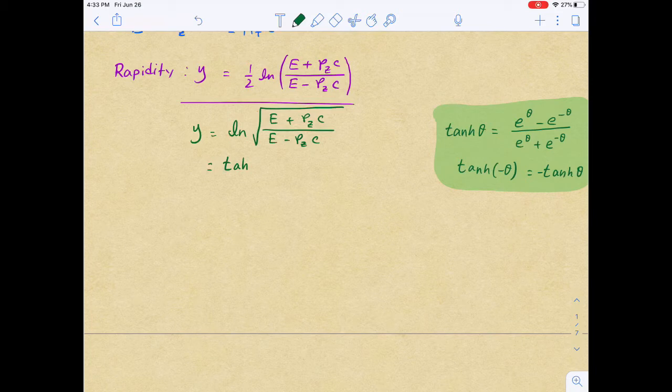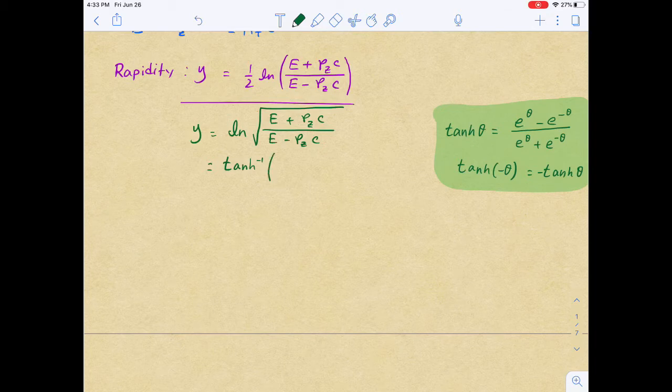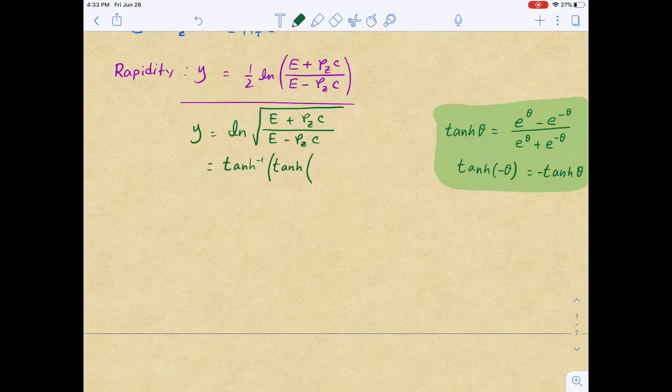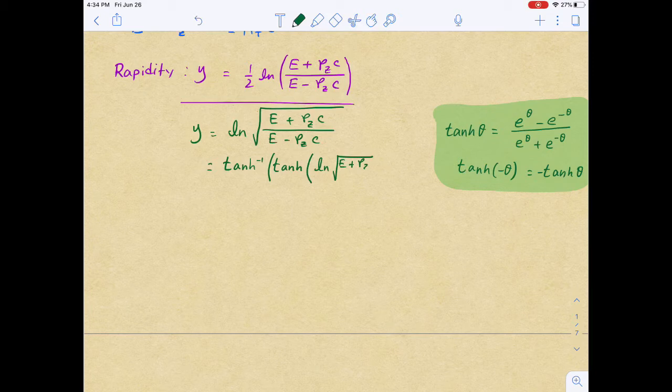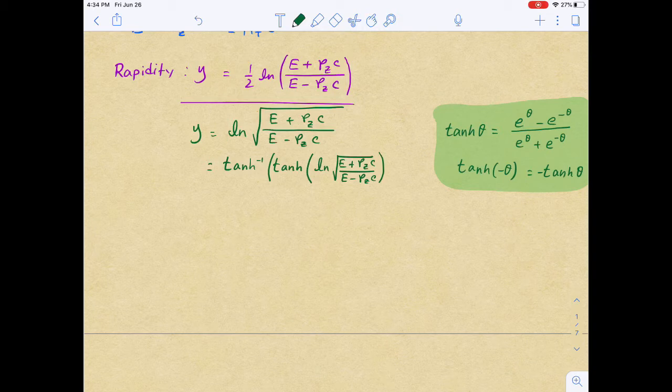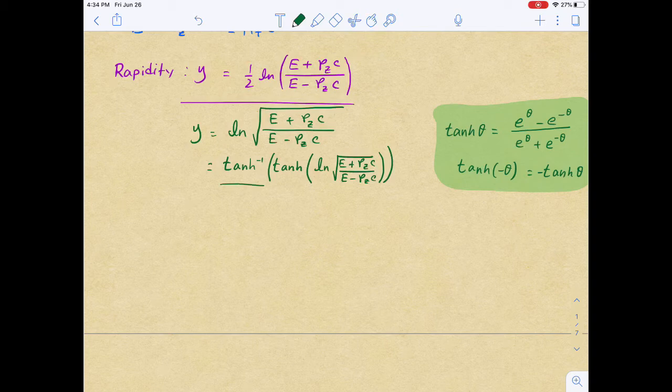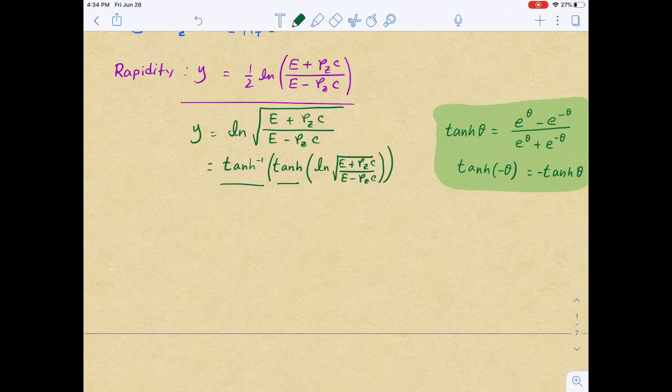If we write this expression where we have an inverse hyperbolic tangent of hyperbolic, of natural log of the same expression I will write down here, pzc divided by E minus pzc. So, if we have inverse of a function of that function, that basically brings us to the original function that we have here.